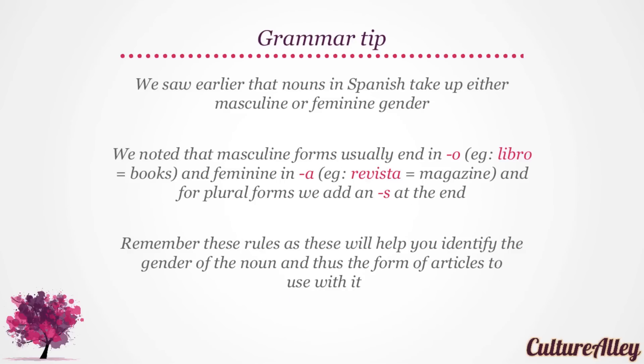We saw earlier that nouns in Spanish take up either masculine or feminine gender. Masculine forms usually end in o — for example, libro, or book. And feminine in a — for example, revista, or magazine. And for plural forms, we add an s at the end. Remember these rules, as these will help you identify the gender of the noun and thus the form of the articles to use with it.